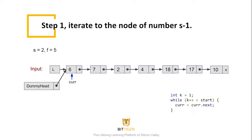For example, in this problem, the head node of the sublist is the second node, 7. In this step, we move the iterator pointer to the first node, 6, and then stop.